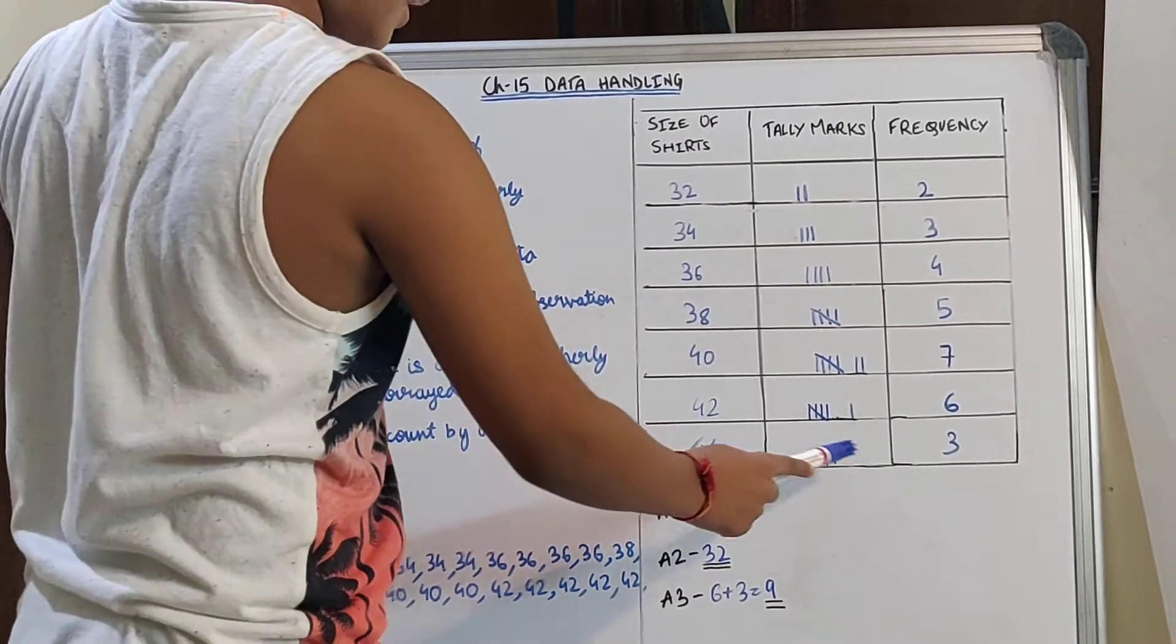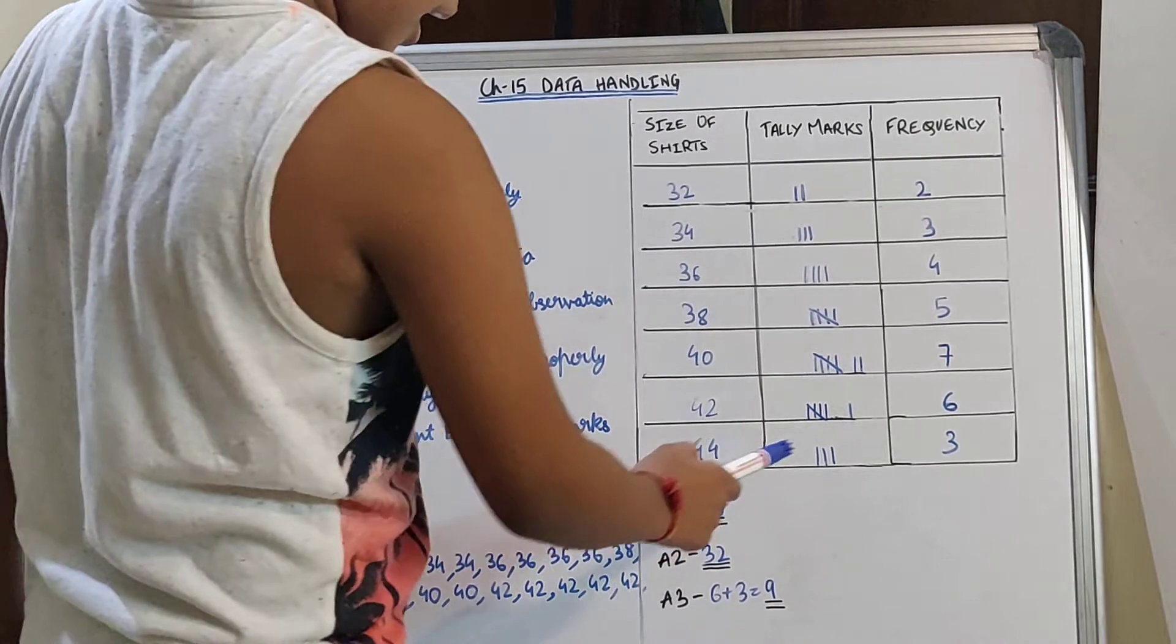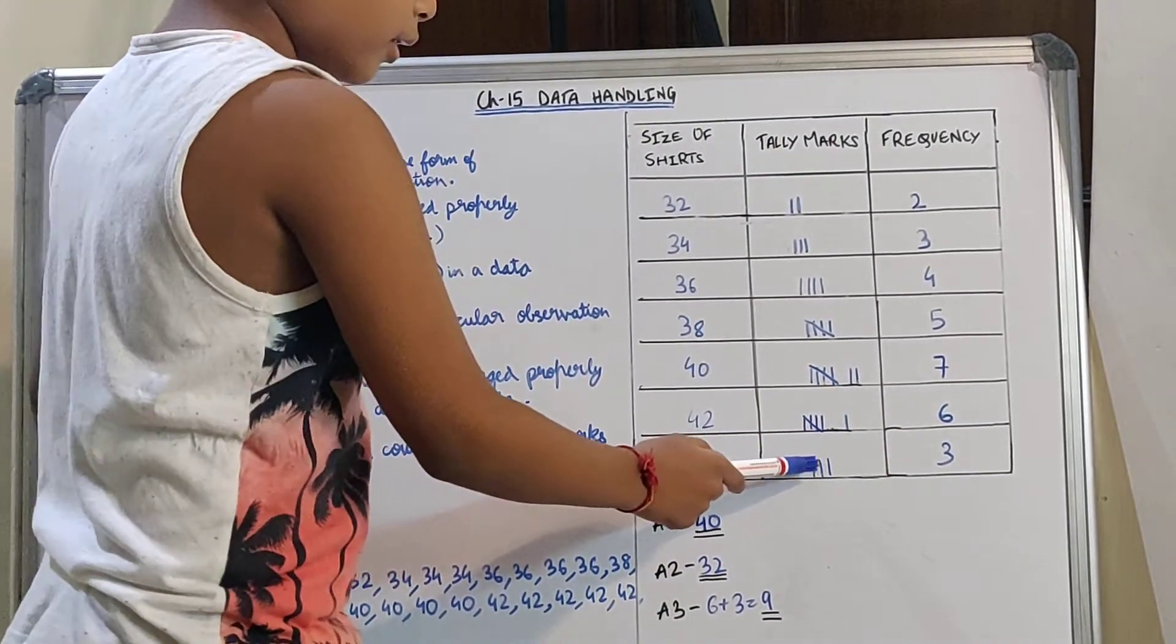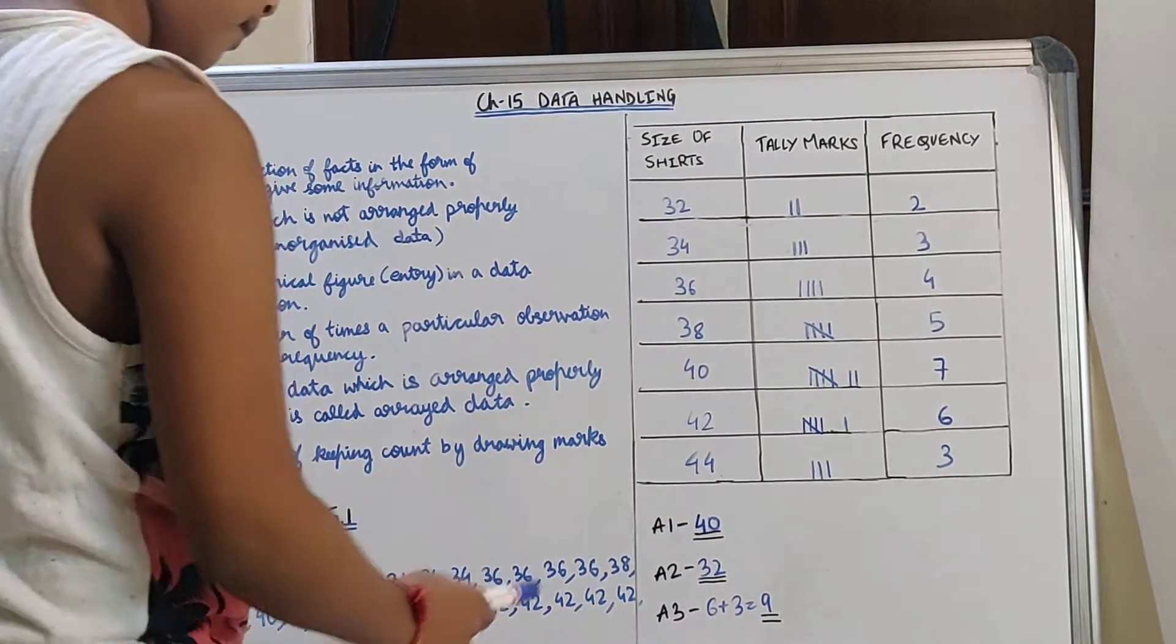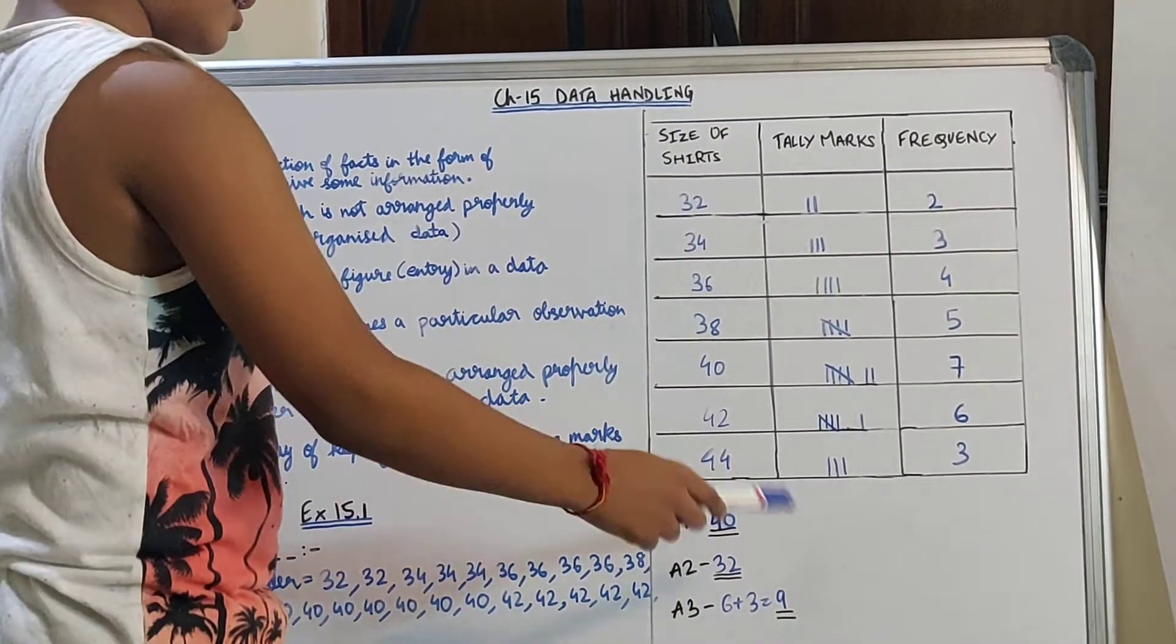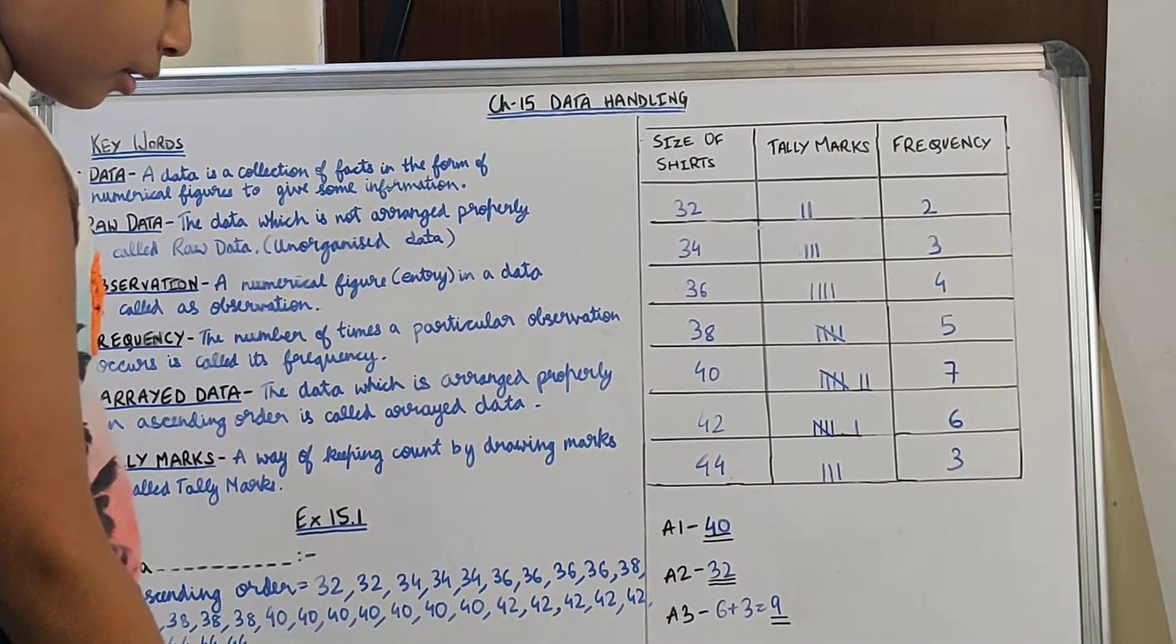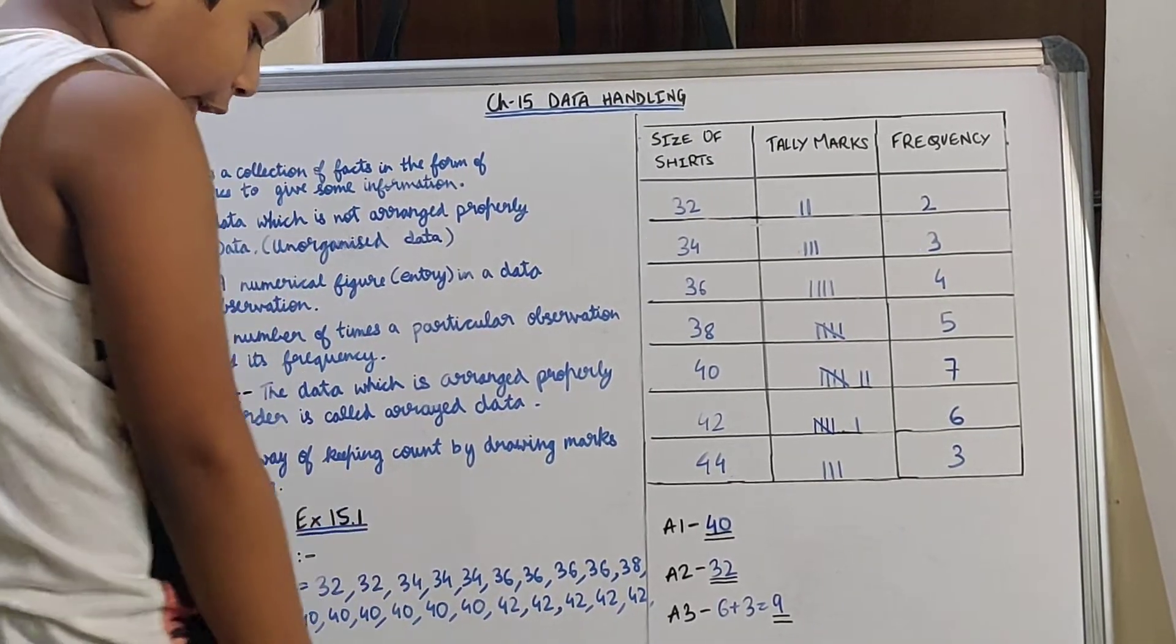Then 44 is repeated 3 times, and 3 in the frequency table. Then 3 tally marks. Now we have made the frequency distribution table. Now we are asked to also answer the following questions.